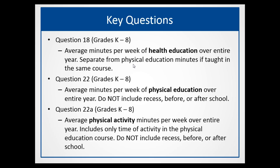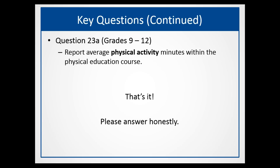Question 22A asks for physical activity during PE class only — again, think about the entire year and only activity during the PE course, not recess and not before or after school clubs or sports. For high schools, grades 9–12, question 23 asks about average PE minutes within the PE course. The same rule applies: think about it in the context of the year, focus on average physical activity within the course, and don't include after-school or before-school activity. Answer honestly and as accurately as you can.